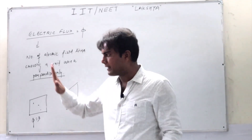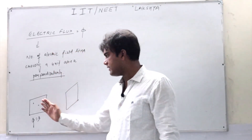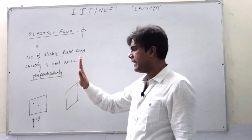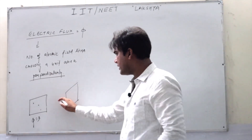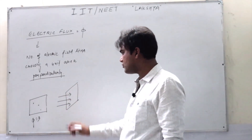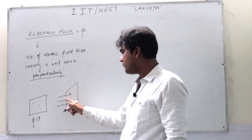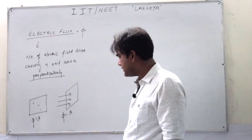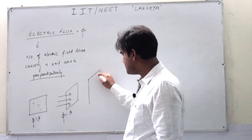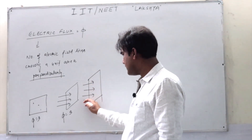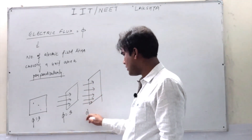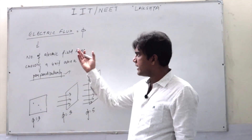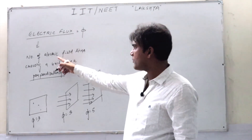Let me show you another view. Assume this is your palm. Earlier this palm was kept like this and we were calculating field lines crossing it. Now we are keeping this palm like this, and we need to calculate only those field lines which are crossing this unit area perpendicularly. So here the flux is three. If we increase the area, then flux may also increase — here the flux is five — but only the perpendicular lines are to be counted.